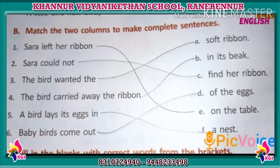The fourth one: the bird carried away the ribbon in its beak. Match four with option B. The fifth one: a bird lays its eggs in a nest. Match five with option F. The sixth one: baby birds come out of the eggs. Match six with option D.